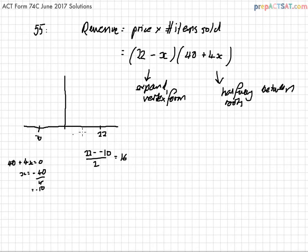The total distance between the two roots is 32. Half of that distance is 16. So the vertex is at 22 minus 16, which is 6.